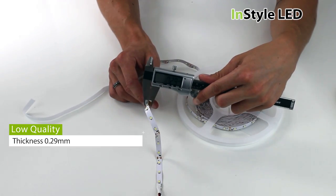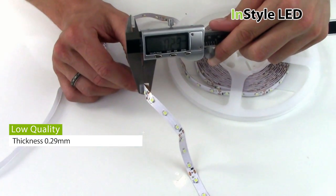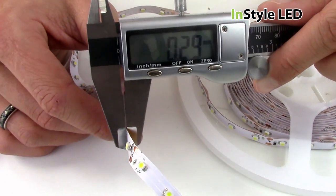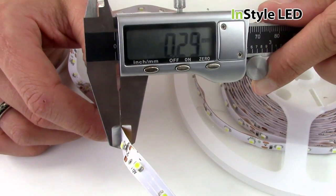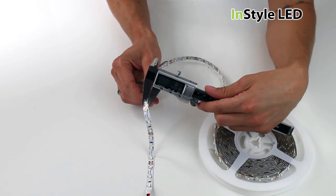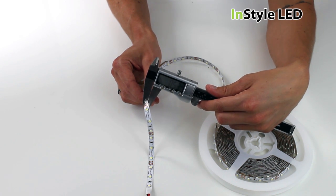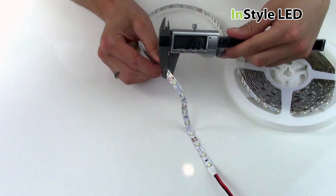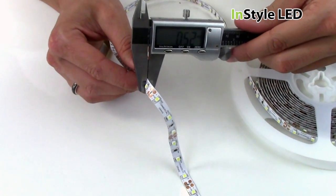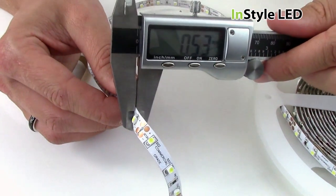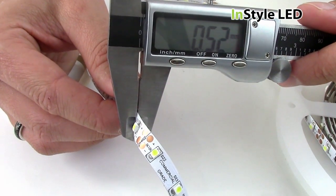The thickness of the low quality LED strip is 0.29mm. The thickness of the high quality LED strip is 0.52mm. This means the low quality LED strip will deteriorate in brightness quicker than the high quality LED strip, as there is less heat dispersion.